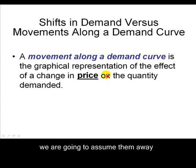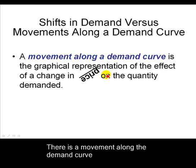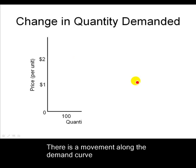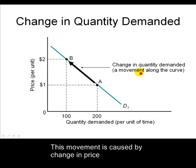We're going to see that there are two types of movements: one is called a shift in demand and one is a movement along the demand curve. A movement along the demand curve is what happens when price changes — it moves the quantity demanded. At point A at $1, we are selling 200 units as quantity demanded. When the price goes up to $2, quantity demanded falls by 100 and we move up to point B. This is called a change in quantity demanded, or a movement along the demand curve, and it is only caused by a change in price.